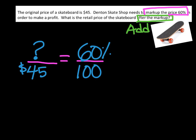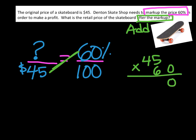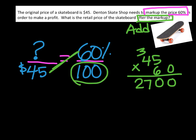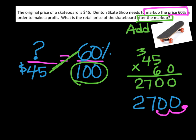Step 2 is to cross multiply: 45 times 60. 6 times 5 is 30, 6 times 4 is 24 plus 3 is 27, so right now I have 2,700. The last step is to divide by 100 — that's the number we haven't used yet. An easy way to divide by 100 is to put a decimal at the end of the number and bump it back two times. So 2,700 divided by 100 equals 27.